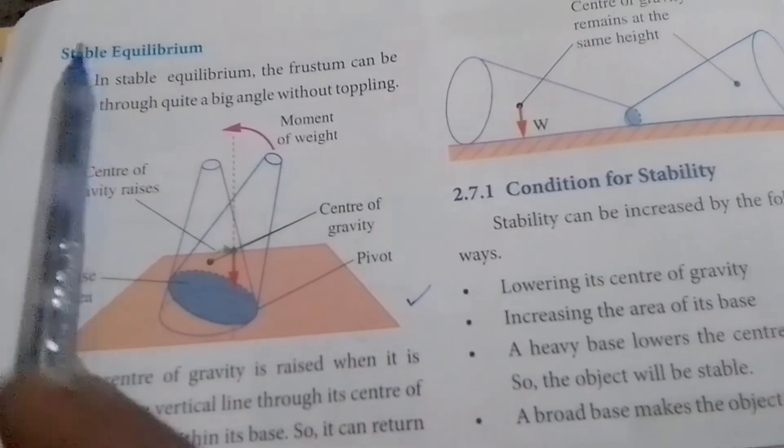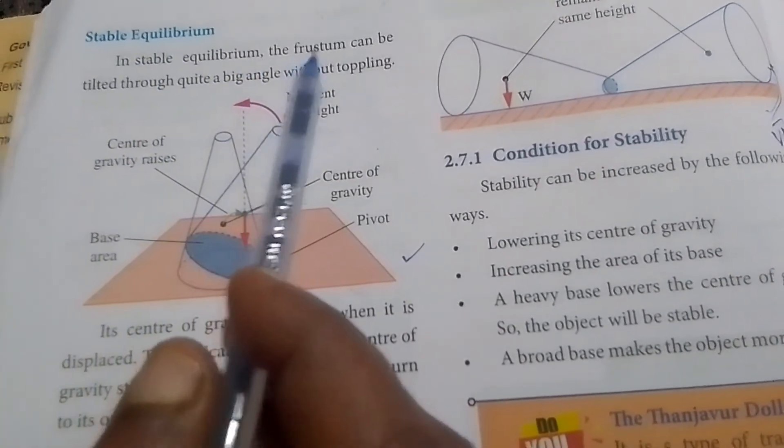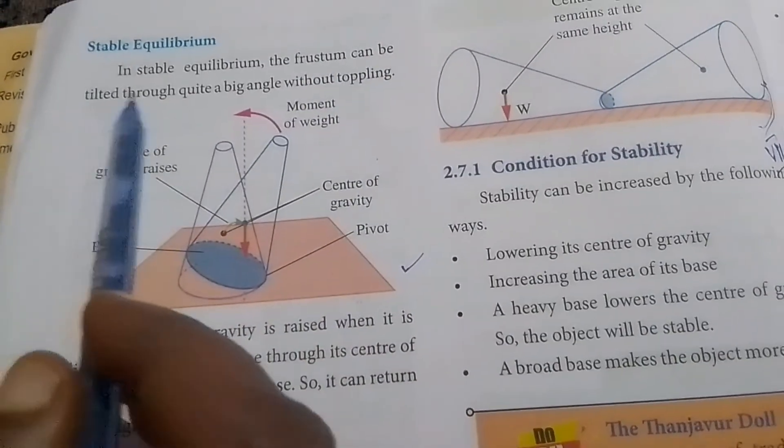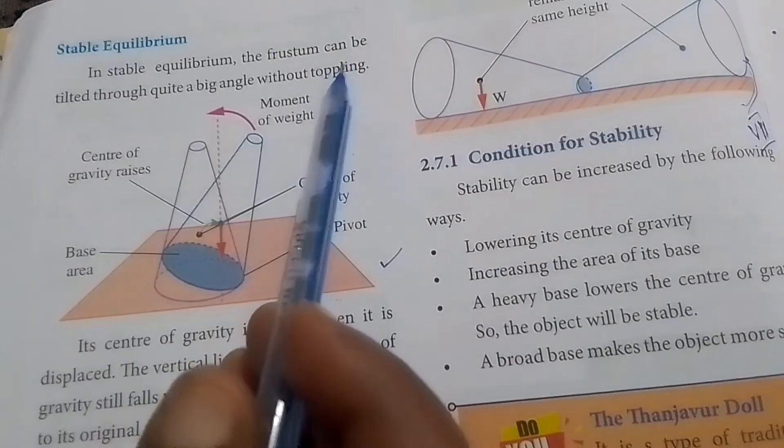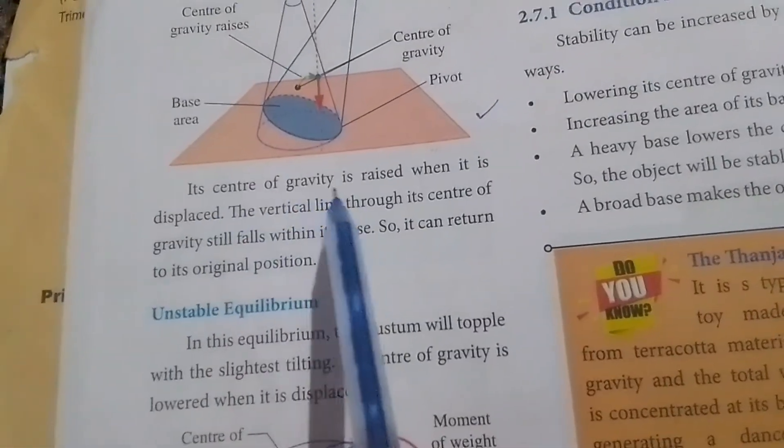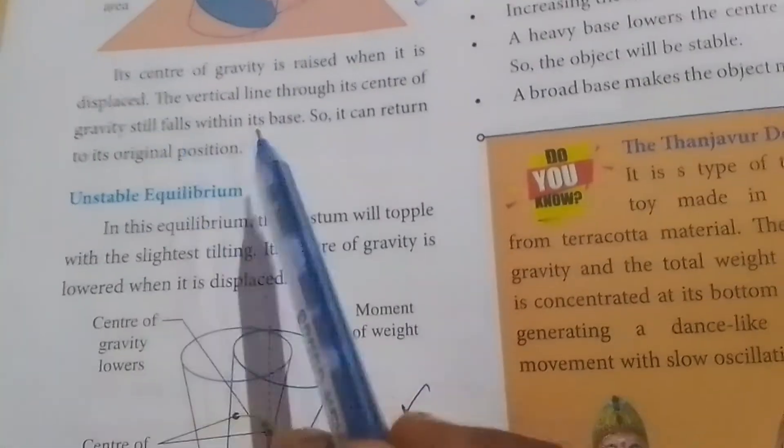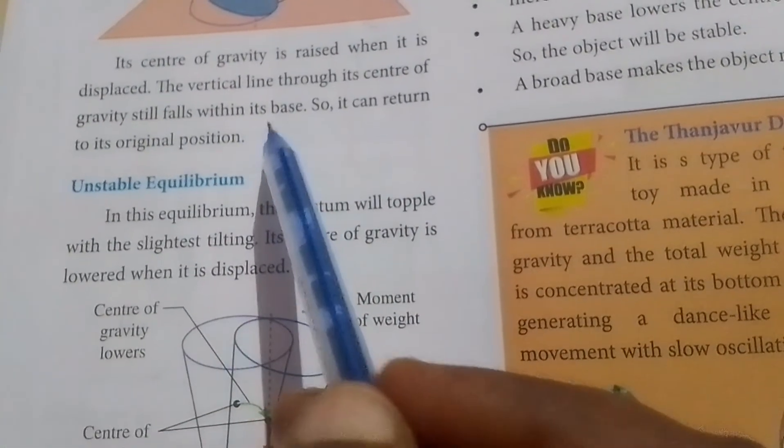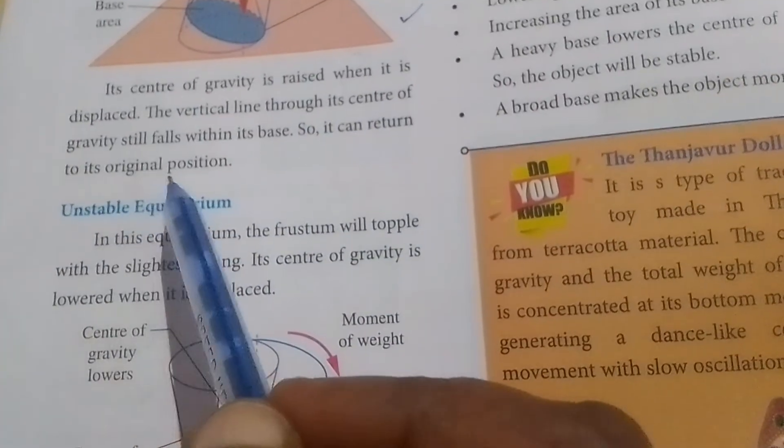Stable equilibrium: In stable equilibrium, the frustum can be tilted through quite big angle without toppling. In the diagram, draw it on your own. Its center of gravity is raised when it is displaced. The vertical line through its center of gravity still falls within its base, so it can return to its original position.